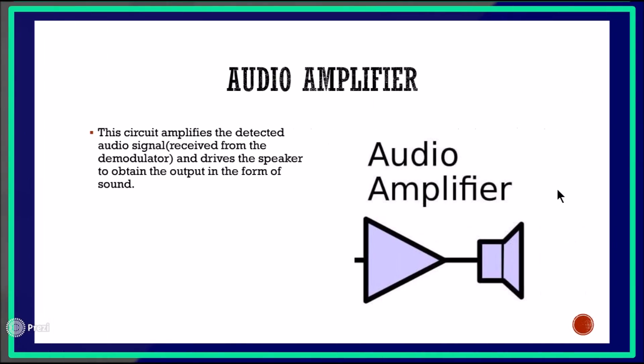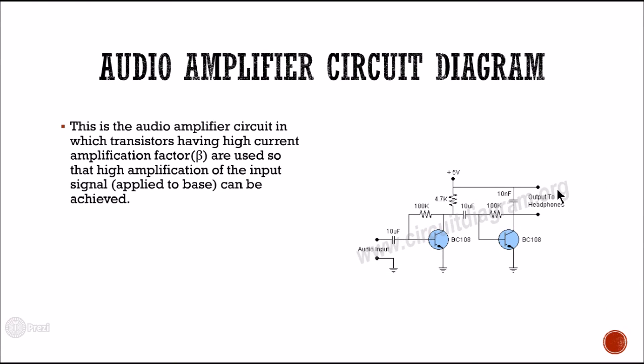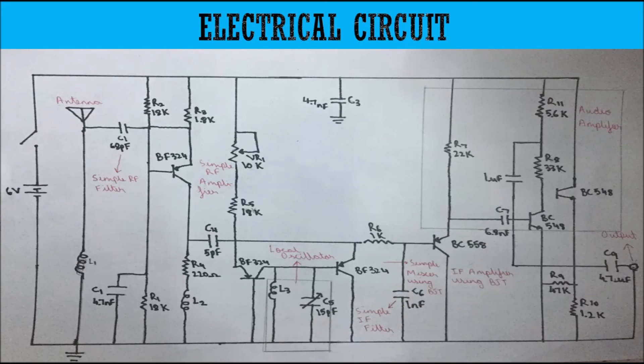Now comes the audio amplifier. We have received our demodulated signal, and the last thing is to amplify the signal to receive a better and clearer output. This circuit amplifies the detected audio signal received from the demodulator and drives the speaker to obtain the output in the form of sound. This is a basic circuit diagram with two transistors. We adjust the high current amplification factor — the beta value — of the transistors so that the signal amplitude is high enough to be listened to easily. All complex electrical circuits are now integrated into one whole so you can make your own radio receiver.